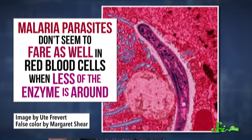Researchers think that G6PD mutations may have stuck around in ethnic populations from these areas because mutations might help protect people from malaria. Malaria parasites don't seem to fare as well in red blood cells when less of the enzyme is around.